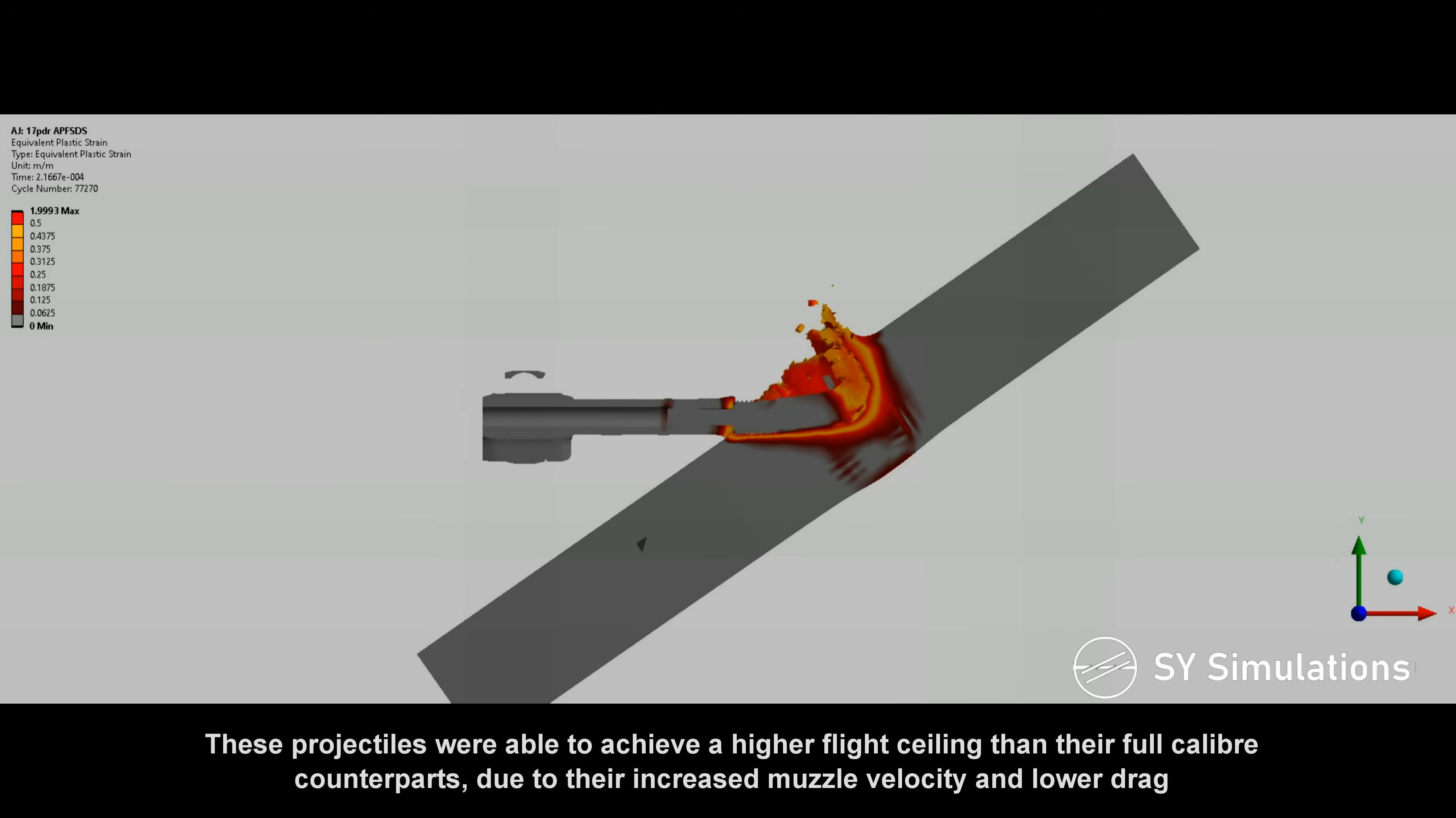These projectiles were able to achieve a higher flight ceiling than their full-caliber counterparts, due to their increased muzzle velocity and lower drag.